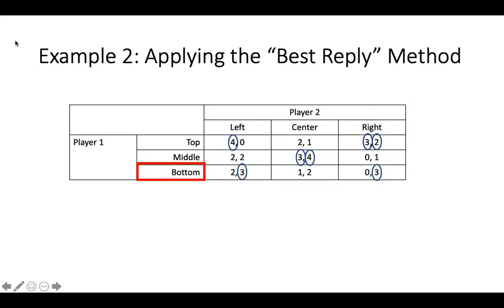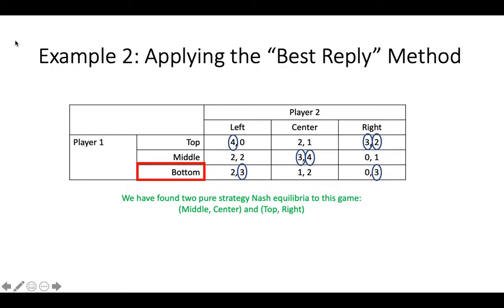Now we're finished. The Nash Equilibria are the squares of the table in which both players' payoffs are circled, because at these outcomes each player's strategy choice is the best given what the other player is doing. Using the best reply method, we have found two pure strategy Nash Equilibria: middle center and top right. Whether we use the best reply method or method one, we will always find the same set of pure strategy Nash Equilibria.